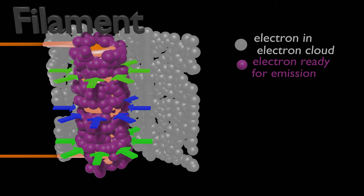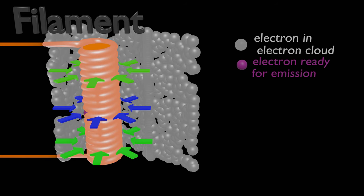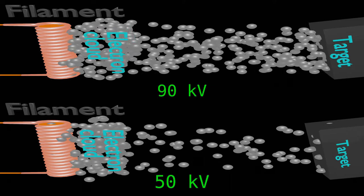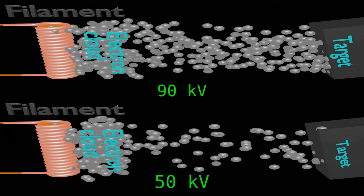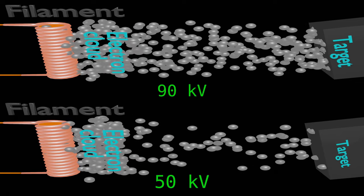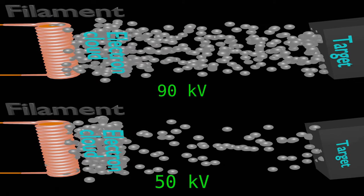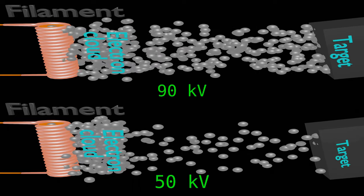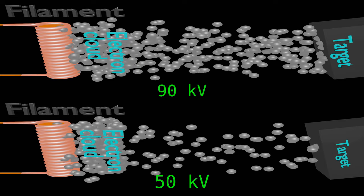This is called space charge effect. Electron cloud can completely stop emission of electrons. When kV is applied, electrons will start moving towards anode and number of electrons in the cloud will reduce.